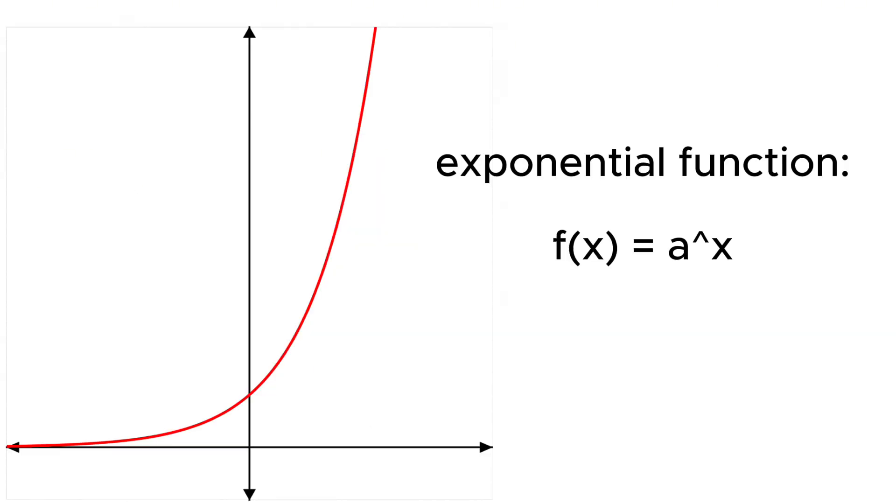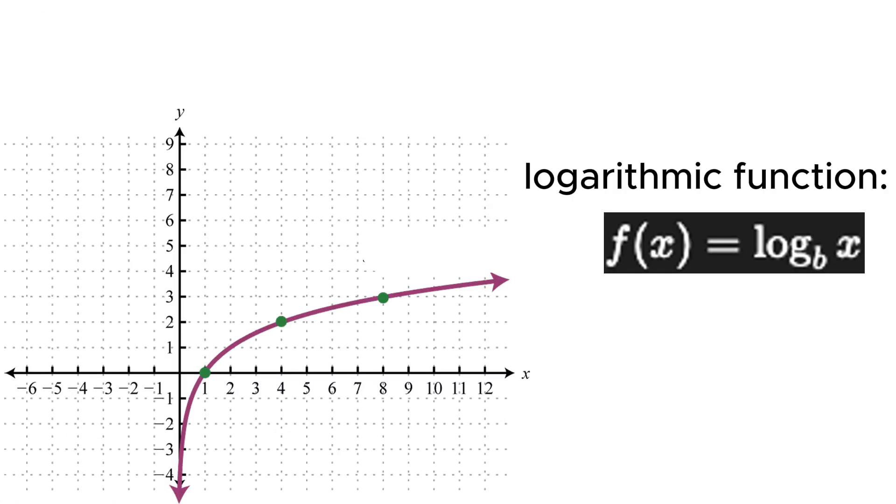And then for exponential, it grows fast, which means only after a little bit of change in the x-axis, a lot of change happens in the y. The formula is f of x equals a to the power of x.